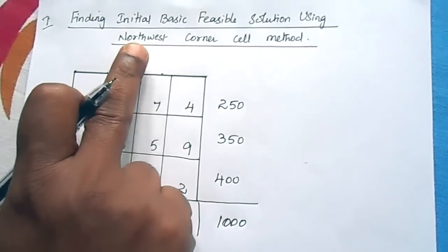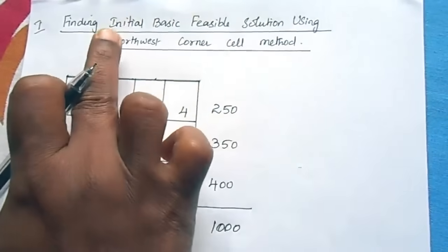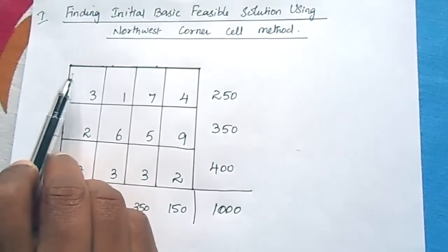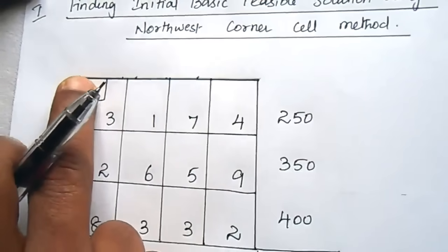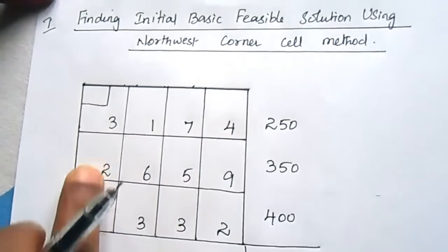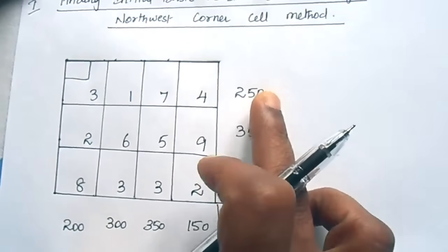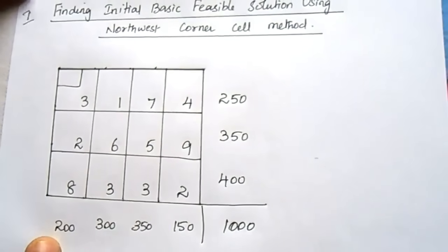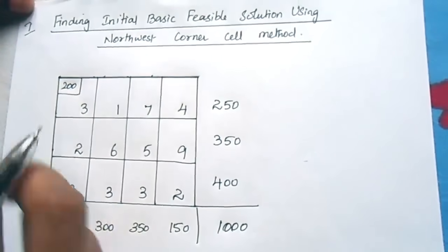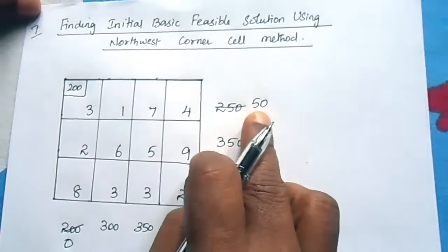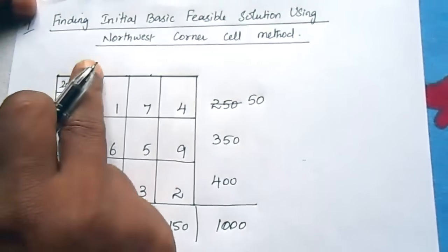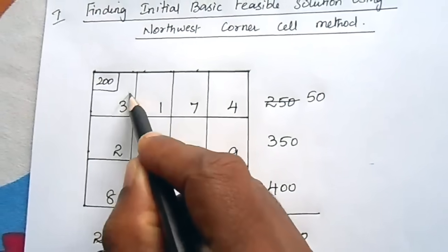Now applying the Northwest corner cell method: start from the Northwest corner cell. The row value is 250 and the column value is 200. The least is 200, so allocate 200 to this cell. The column value becomes 0, so cancel the first column. The remaining row value is 50.